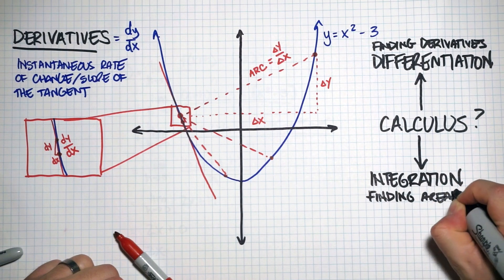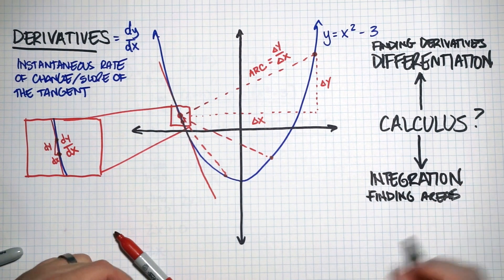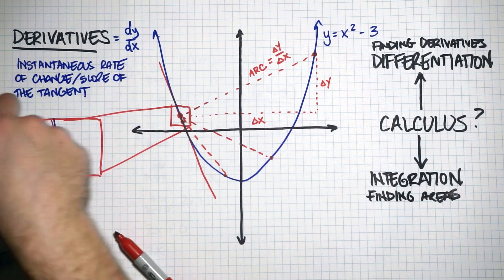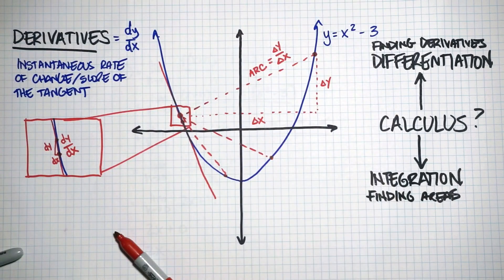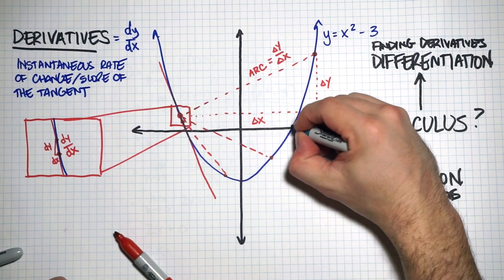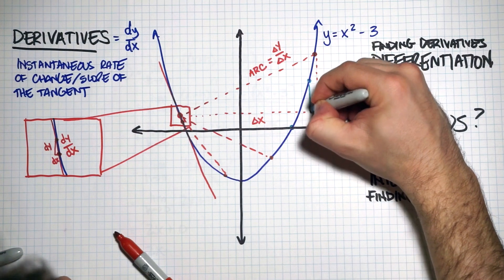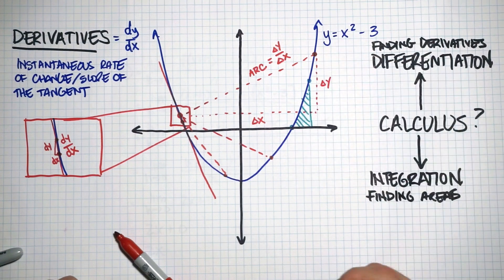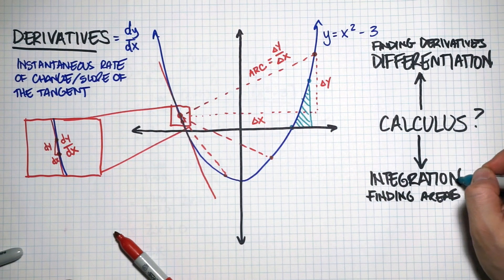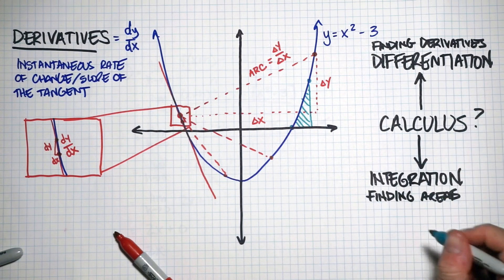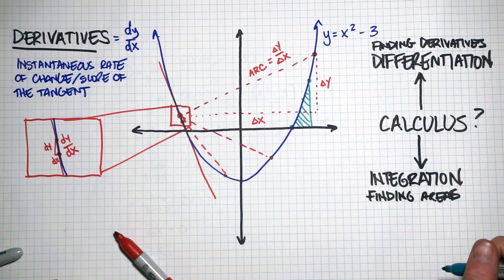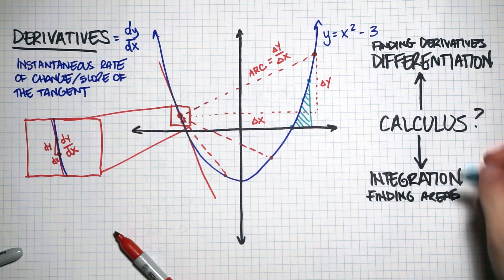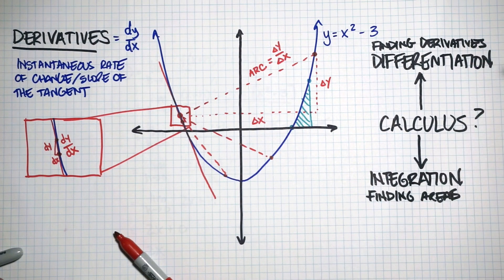Just as a quick demonstration: if you're looking for the area below the curve between two points — for example, this area here — you would use the other part of calculus, which is integration. But we'll save that for another course. Essentially what we're doing here is finding slopes of tangents, and that's what we've been doing all along.